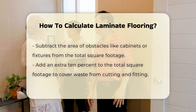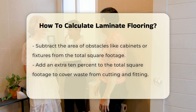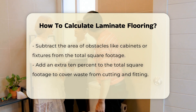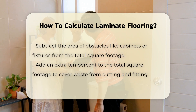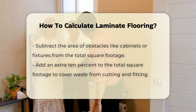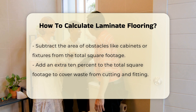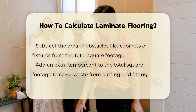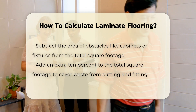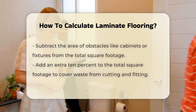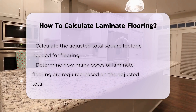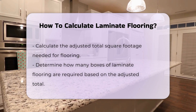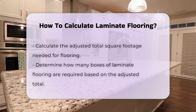If there are obstacles such as cabinets or fixtures, subtract their area from the total square footage. This will provide a more precise measurement of the flooring needed. It is also advisable to add an extra 10% to the total square footage to account for waste due to cutting and fitting during installation.